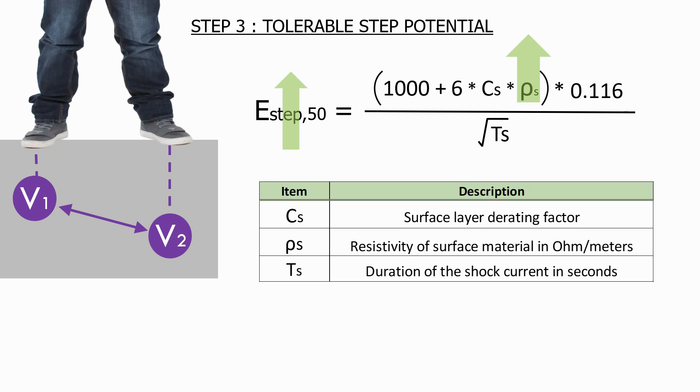As we can see from this equation, as the resistivity of the surface material increases, so does the tolerable step potential, which makes sense, as the surface is giving you more protection.